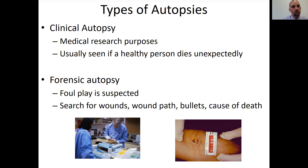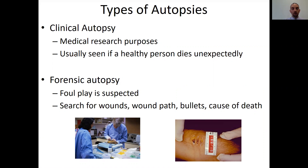Clinical autopsies would be for a family that wants to know why someone may have died unexpectedly. They don't assume foul play, so they're looking at things like heart disease or something wrong with one of their organs.